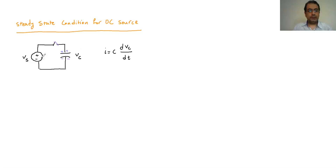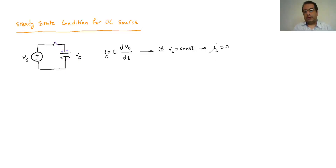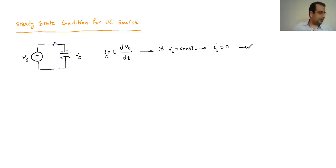Eventually, Vc becomes equal to the source voltage Vs, and there is no current going through the capacitor. The change in V becomes zero — V becomes constant, there's no more change in V. Since I = C · dVc/dt and Vc is constant, the current through the capacitor becomes zero. If a wire has no current going through it, it behaves like an open circuit — it's as if it's not there.